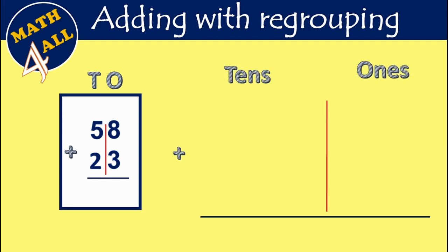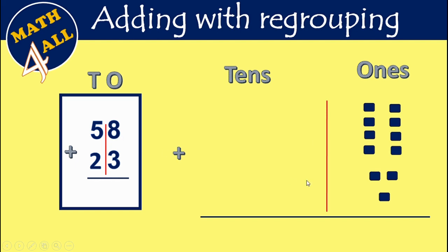Let's add from the ones place. Here we have 8 plus 3. First step: count 3 after the biggest — after 8: 9, 10, 11. So 8 plus 3 equals 11. Can I write 11 in the ones place? Can I write two digits in the ones place? No, I can't.